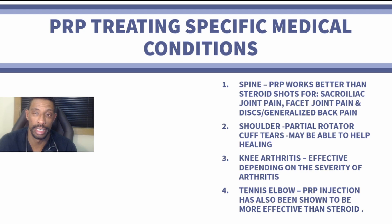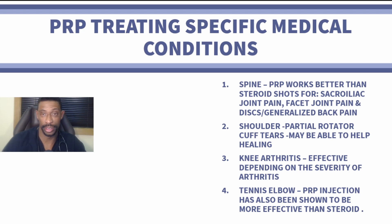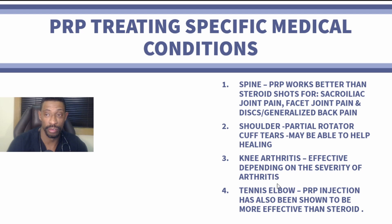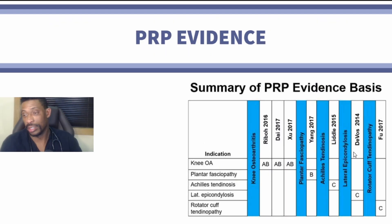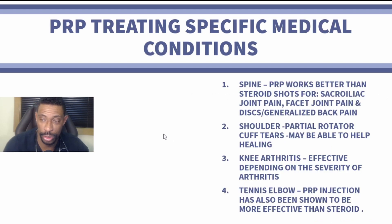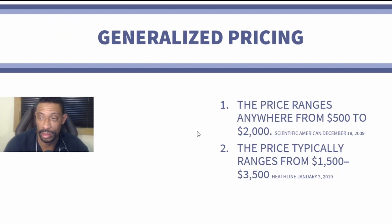What are some of the specific medical conditions that can be treated with PRP? The spine can be treated, particularly the SI joints, facet joints, and potentially the disc. The shoulder for partial rotator cuff tears can see some degree of benefit. Osteoarthritis of the knee, depending on the severity of arthritis, and tennis elbow has been shown to be more efficaciously treated with PRP versus steroid. Studies have also assessed the knee, foot, Achilles tendon, elbow, and shoulder, giving understanding about the true strength of this evidence.